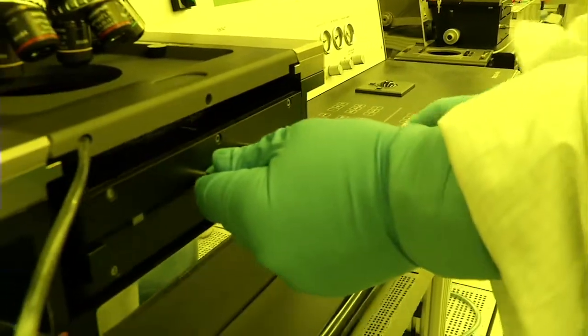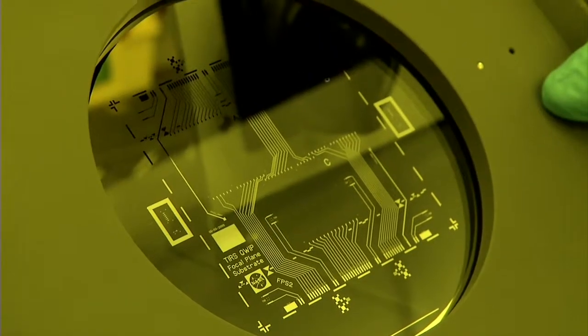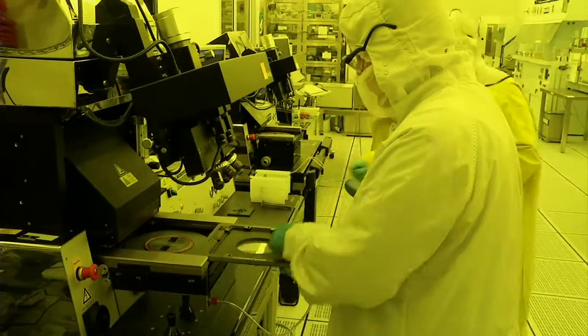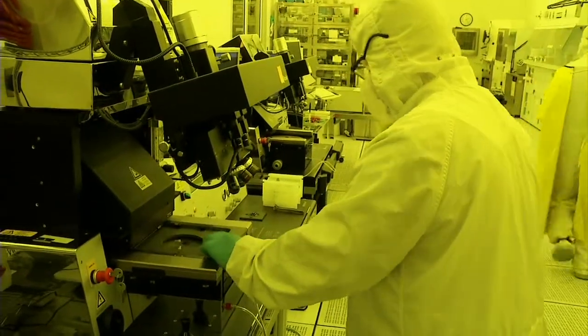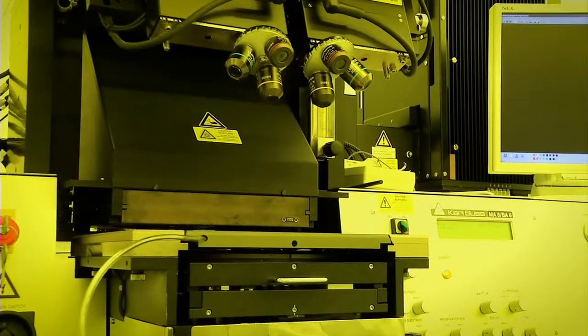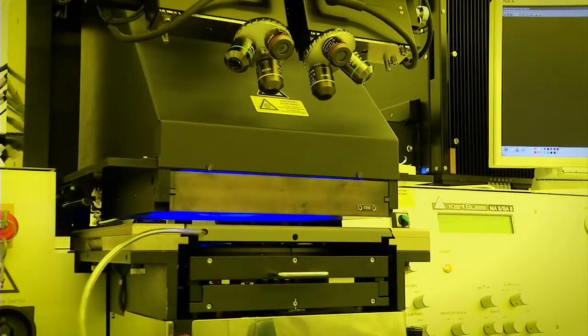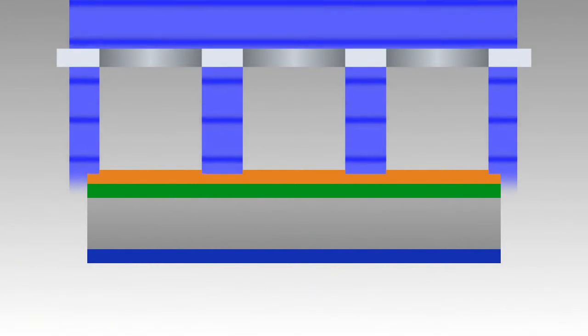The coated wafer is taken to the photomask aligner, where the chrome-on-quartz mask that was created by the design and layout is placed in extremely close proximity to the substrate and aligned to existing patterns within a micron of accuracy. A UV light source exposes the photoresist through the mask, transferring the pattern into the photoresist.